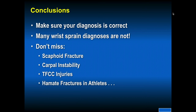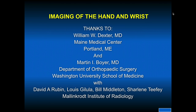In conclusion, make sure your diagnosis is correct. Many wrist sprain diagnoses are not correct — don't miss a scaphoid fracture, carpal instability, TFCC injuries, or hamate fractures in athletes and active people that you're treating. Thanks to Bill Dexter, Portland, Maine; Martin Boyer, Wash U; and Ruben Gulula, Middleton, at the Mallinckrodt Institute of Radiology, for use of some of the slides in this presentation.